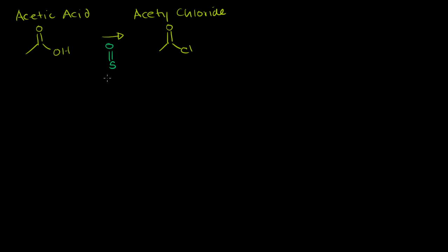Thionyl chloride is a sulfur double bonded to an oxygen, with single bonds to two separate chlorines. Sulfur has six valence electrons, so it has another lone pair. This is the simplest reaction of starting with a carboxylic acid and forming an acyl halide, and it can be generalized easily with a larger chain or other halides.